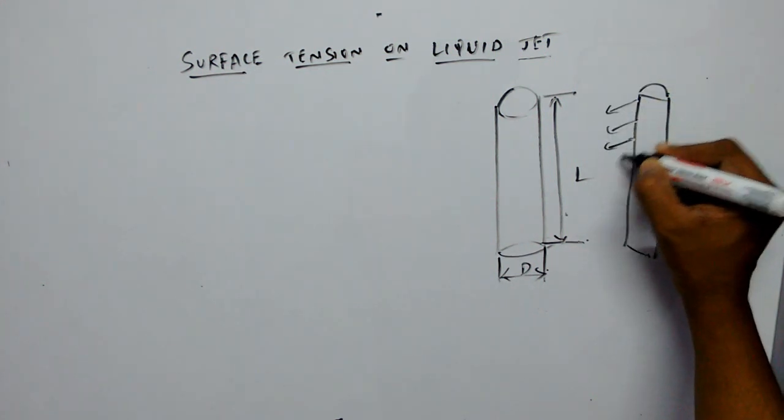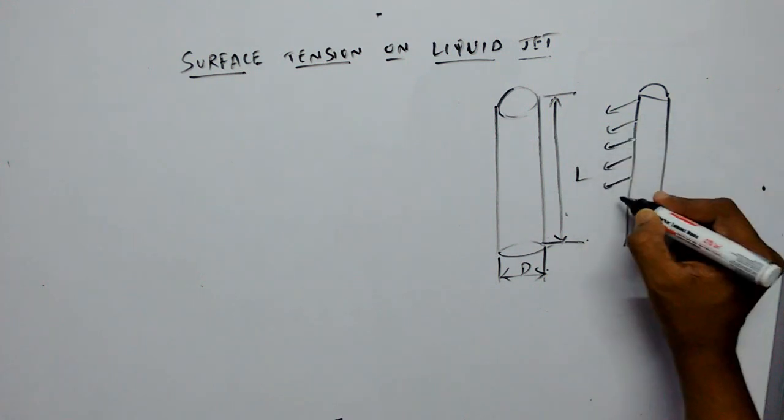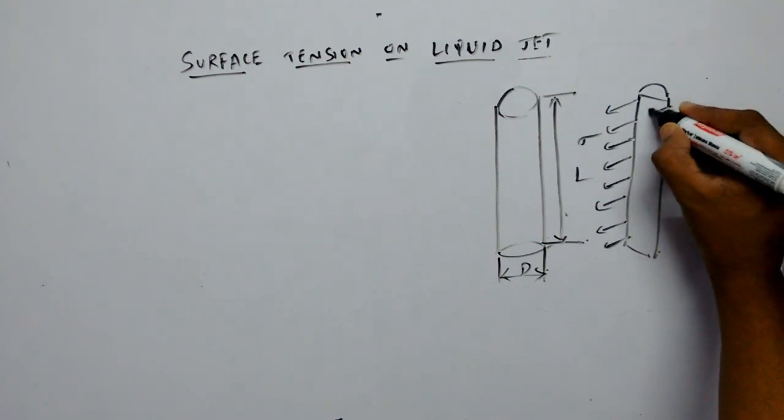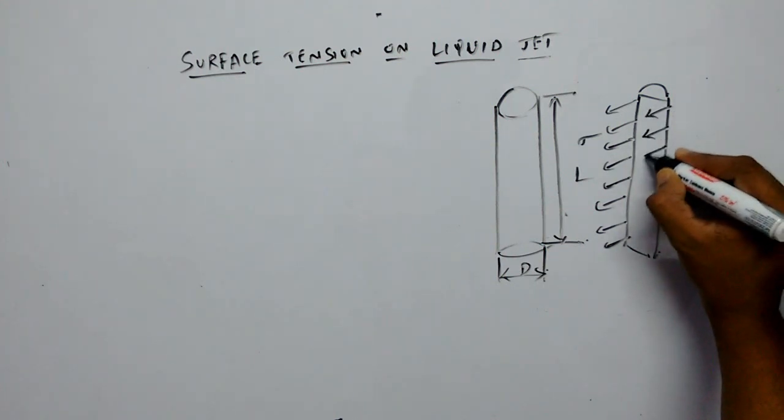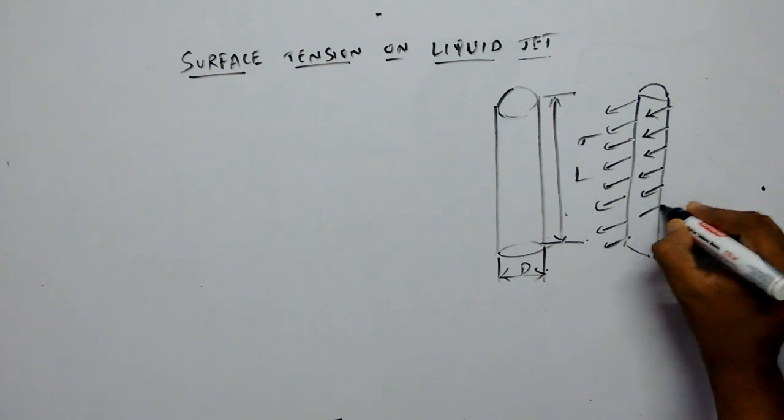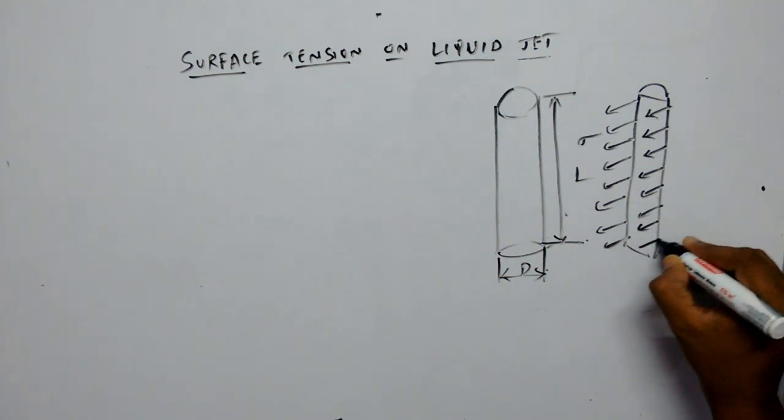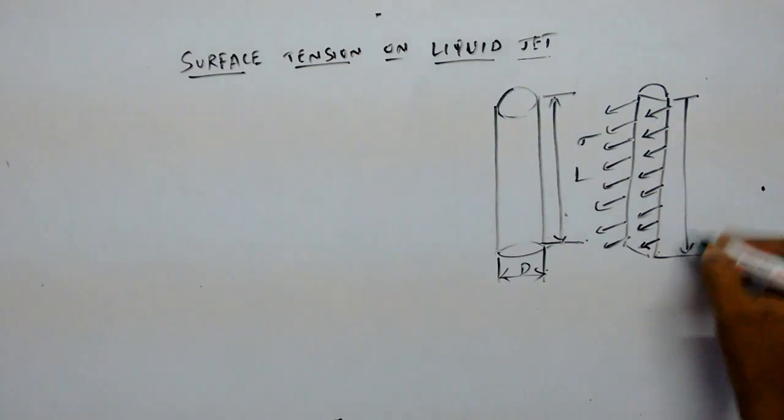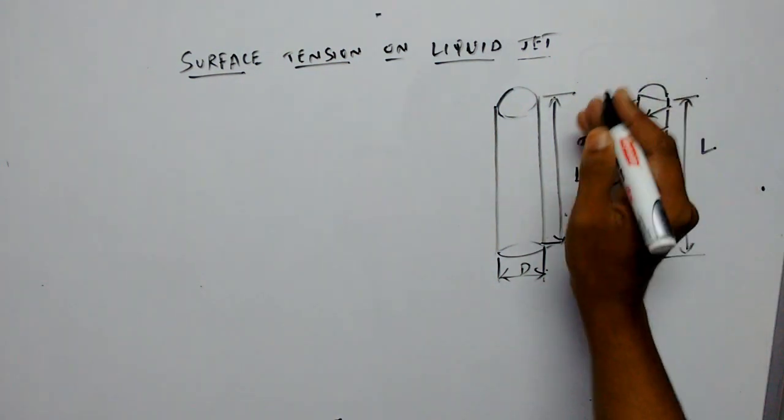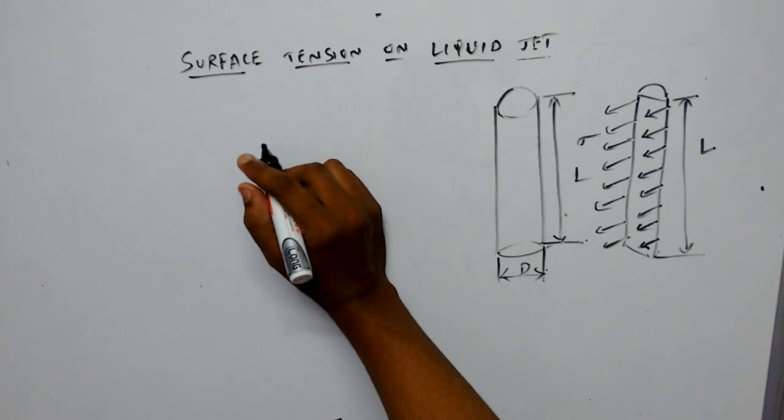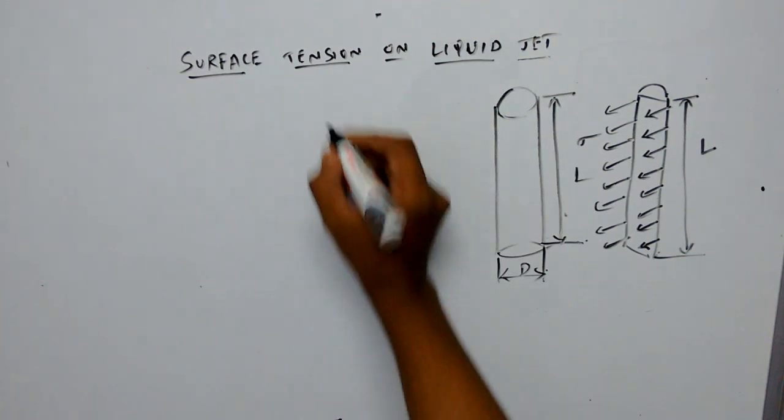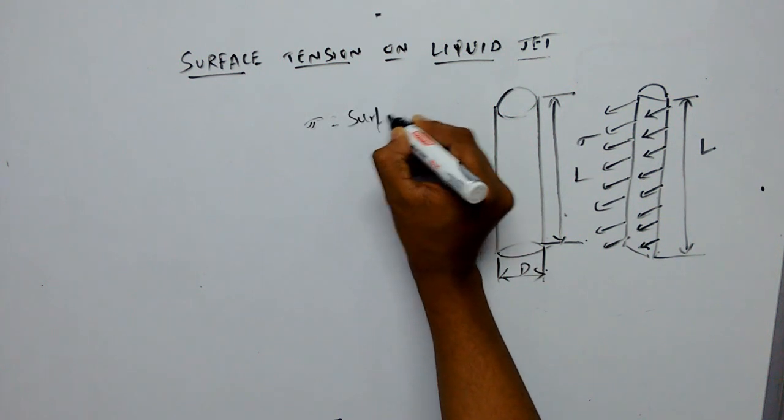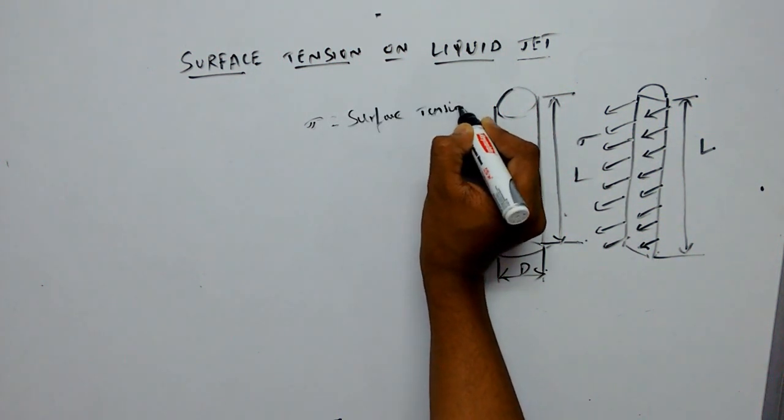As there are two lengths present along the liquid jet - this one is L and also this side one more L - let sigma be the surface tension acting on the liquid jet.